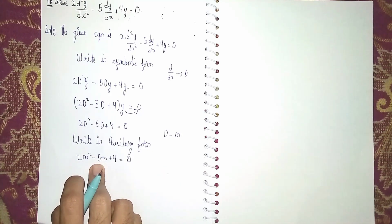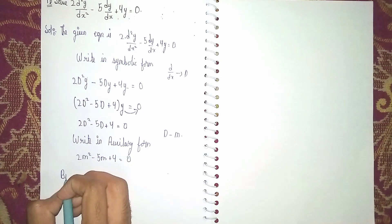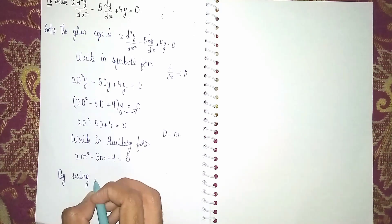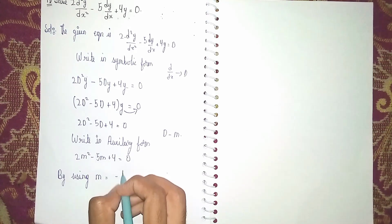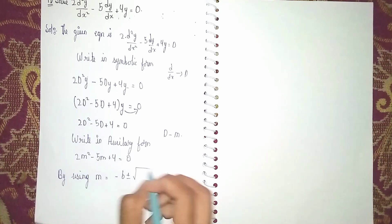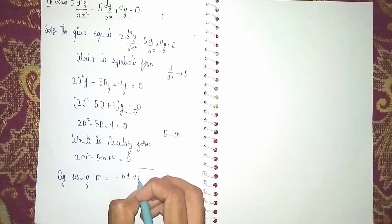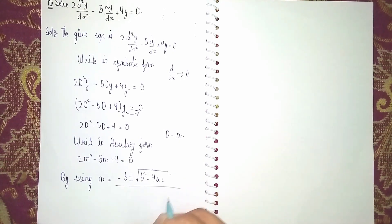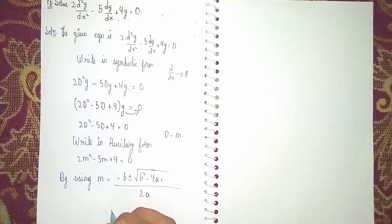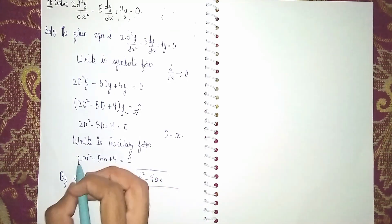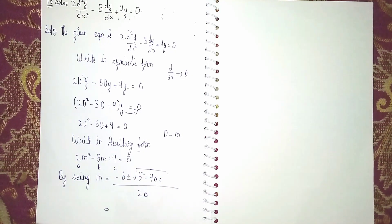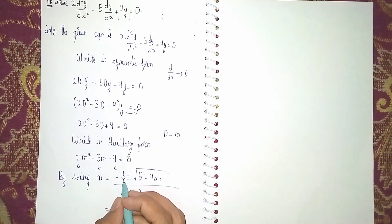So I am using another method: m is equal to minus b plus or minus under root of b squared minus 4ac, divided by 2a. Now substitute the values — this is a, this is b, this is c. Be careful about signs.